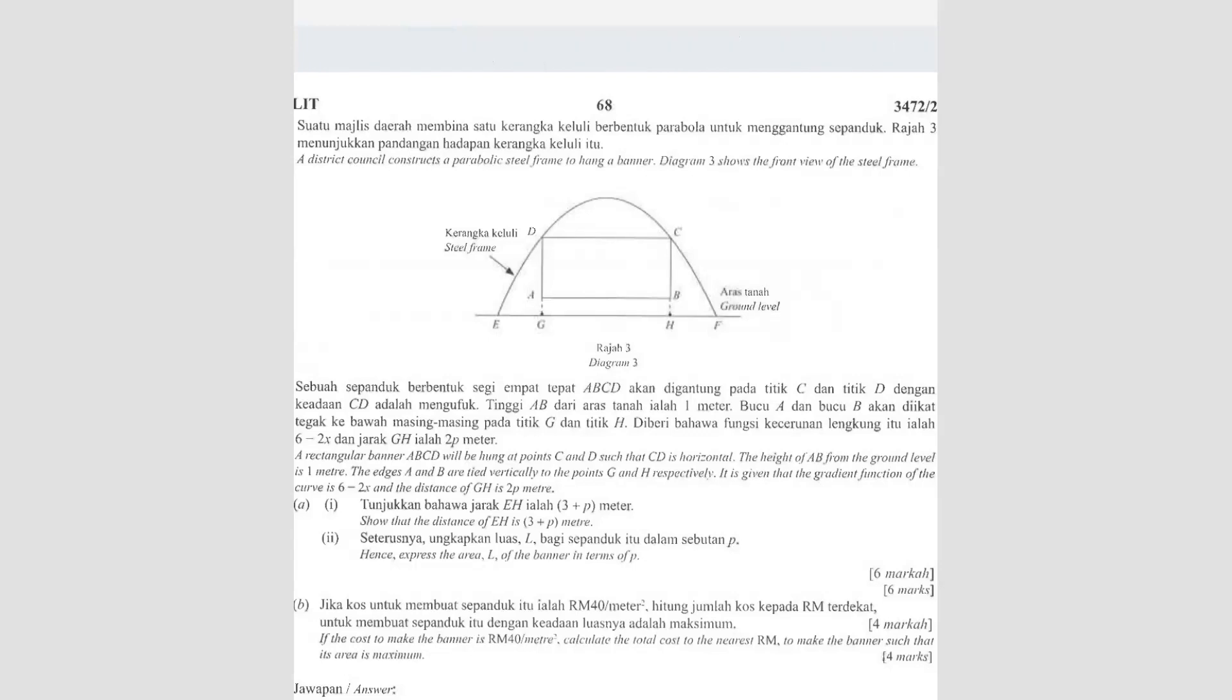Question number 7. A district council constructs a parabolic steel frame to hang a banner. Diagram 3 shows the front view of the steel frame. So a rectangular banner ABCD will be hung at position C and D such that CD is horizontal. The height of AB from the ground level is 1 meter. So this height here is 1 meter.